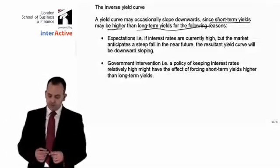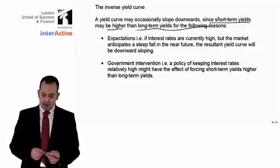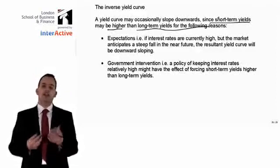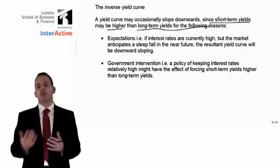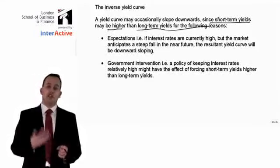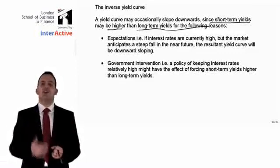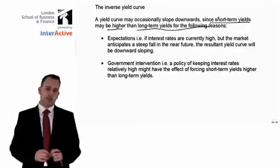Secondly, government intervention may impact interest rates. A policy of keeping short-term interest rates relatively high might force short-term yields higher than long-term yields. The government may be keen to raise a lot of money in the short term for investments in schools and buildings, requiring them to borrow on the open market at relatively high rates of interest. Over a longer period, they may not have the same demand for cash and may offer a lower rate over a 10, 15, or 20-year period. This makes the yield curve downward sloping in the short term, reflecting that demand for cash now is relatively high compared to the future.